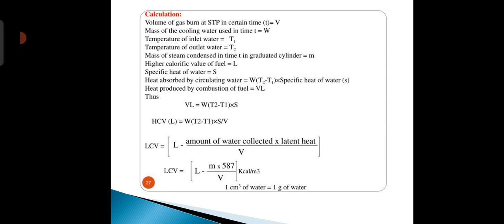Heat produced by combustion of fuel is V times L. So V times L equals W times T2 minus T1 times S. Next, the high calorific value HCV is equal to W times T2 minus T1 times S divided by V.